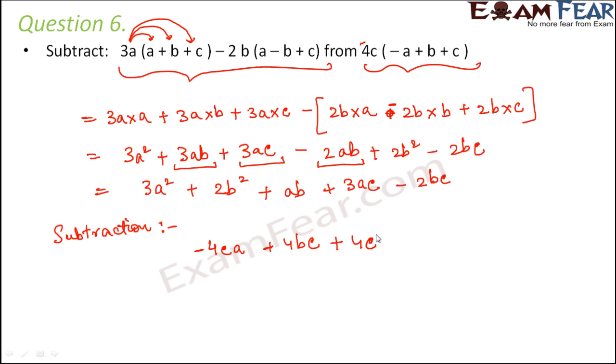By distributive property, this can be written as 4c × (-a) that is -4ac, plus 4c × b that is 4bc, plus 4c × c that is 4c². So we wrote this one first and now from this we need to subtract this. We will write this expression below this one.